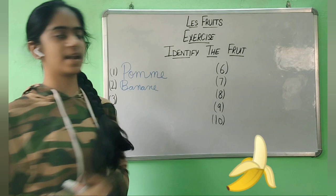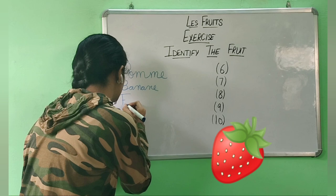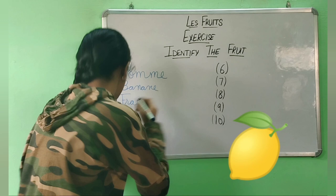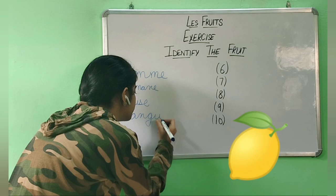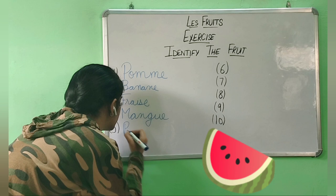Then what is this? Yes, it's the banana, which is banane, banane. Then what is this? Yes, it's the strawberry, which is fraise, fraise. Now what is this? Yes, it's the mango, which is mangue, mangue. What is this? Yes, it's the watermelon, which is pastèque.